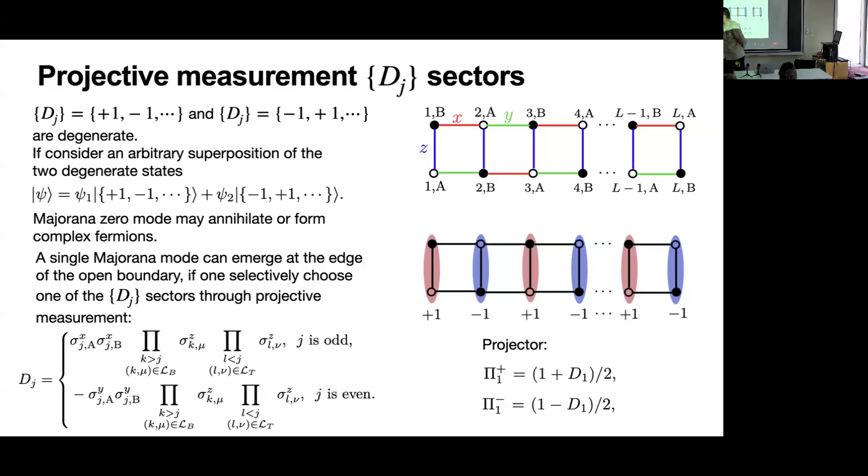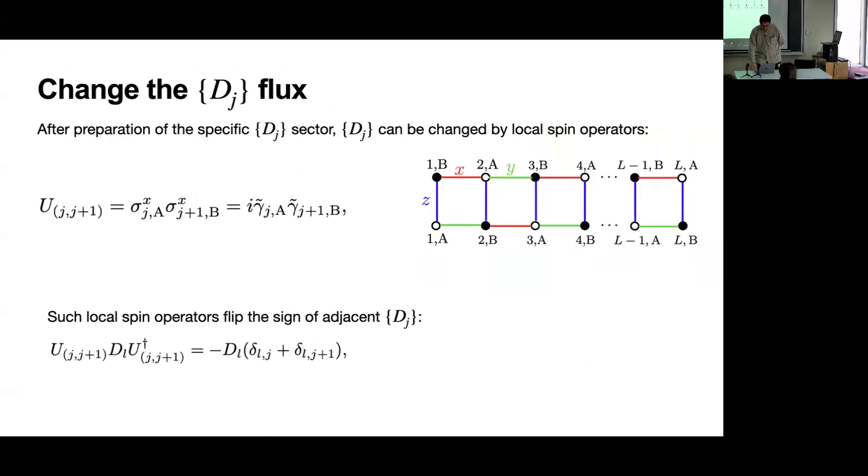Note that because D_j commutes with local operators, once the D_j flux is fixed, the only way to change it is with a local spin operator - the X-X operator on a Y-bond. If you apply X-X operators on a Y-bond, you effectively change the adjacent D_j operators. You will flip the sign of D_j on these two bonds. So with projective measurement and local spin operators, one can reach any of the D_j sectors.